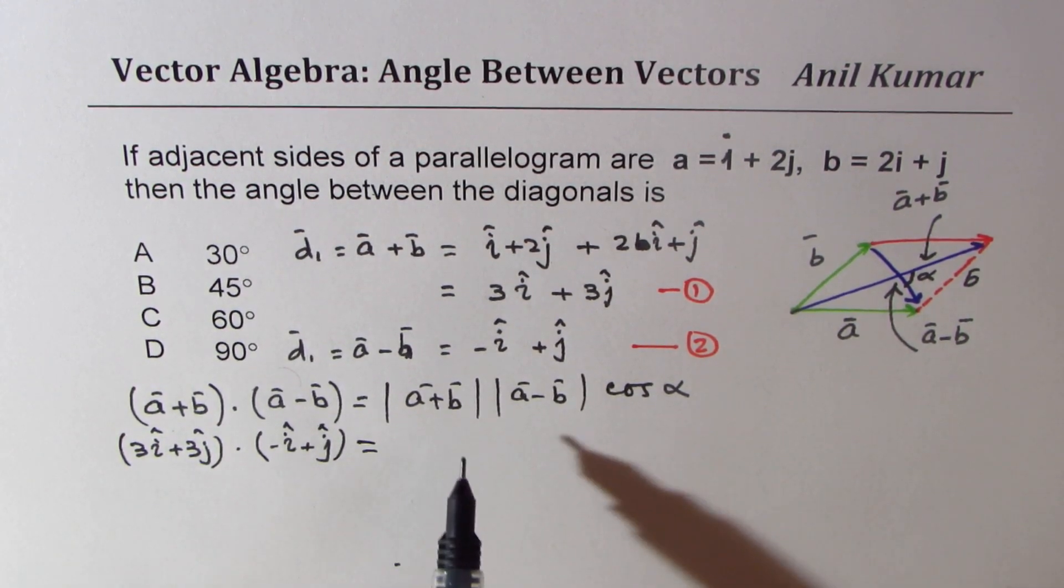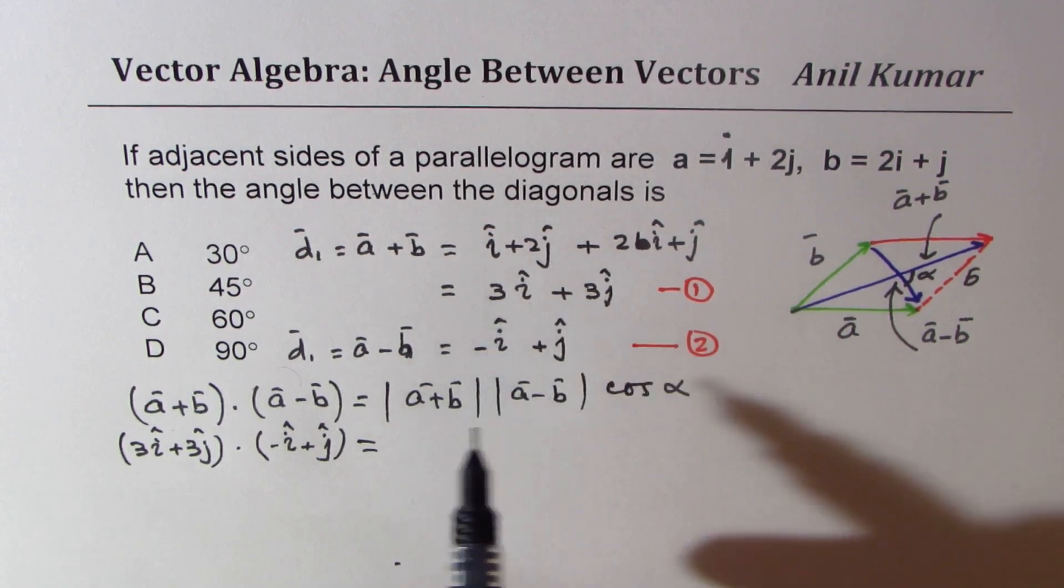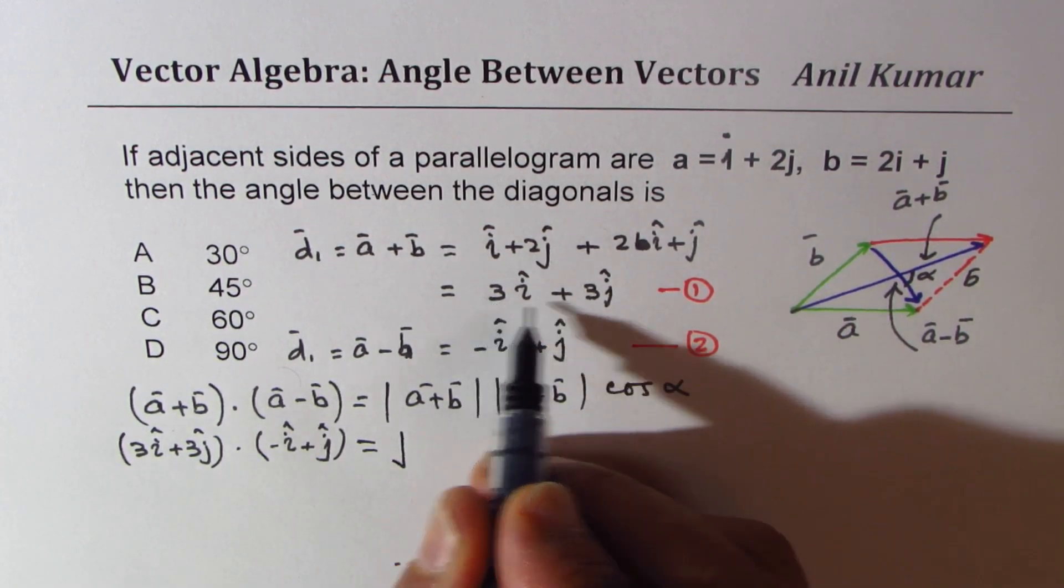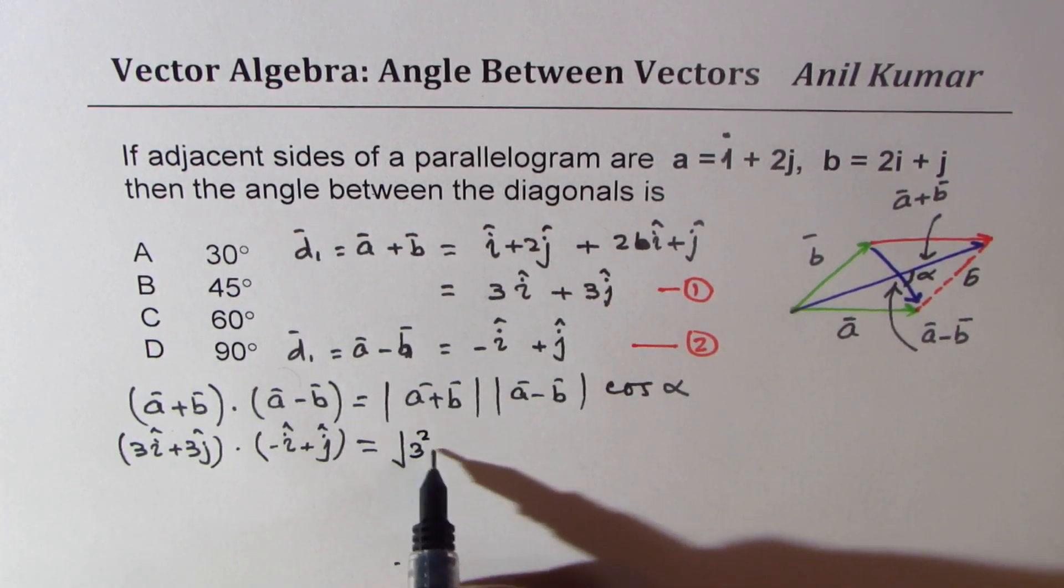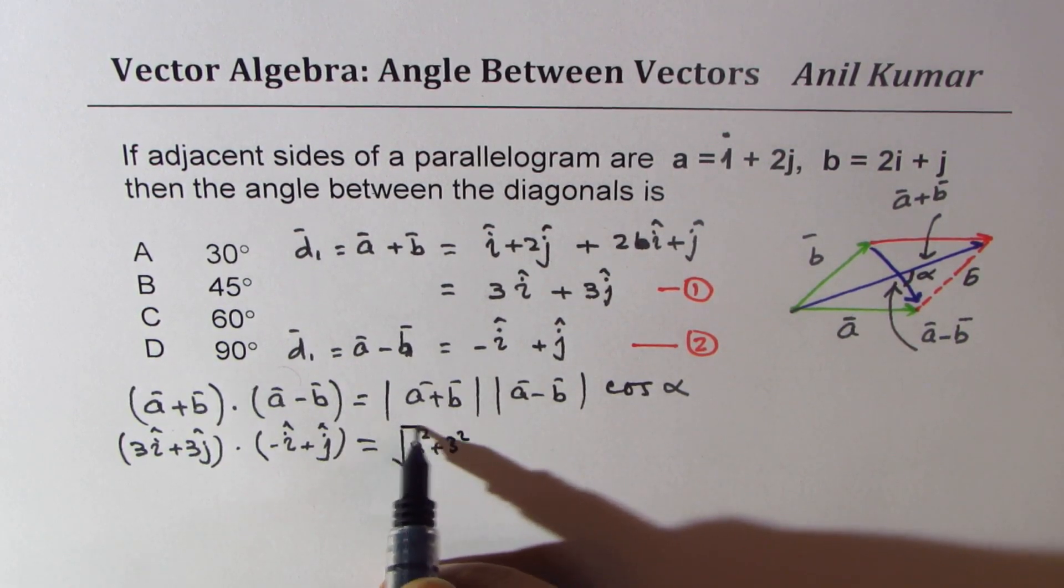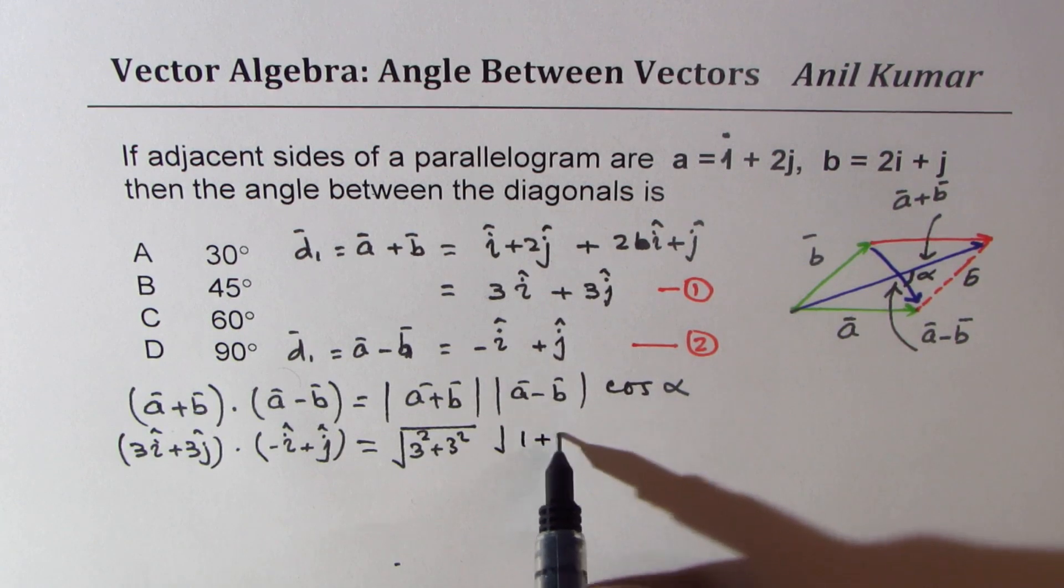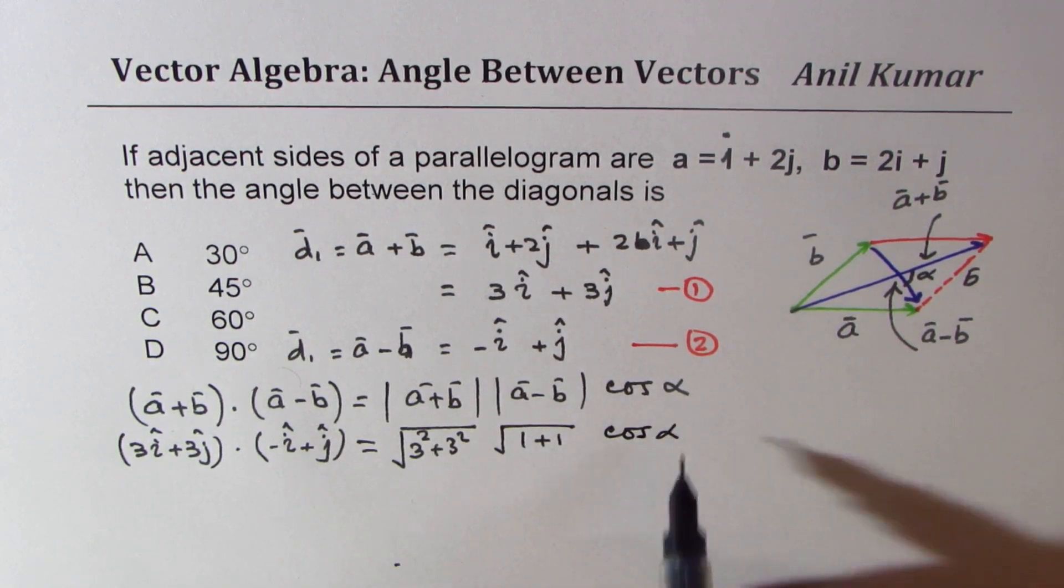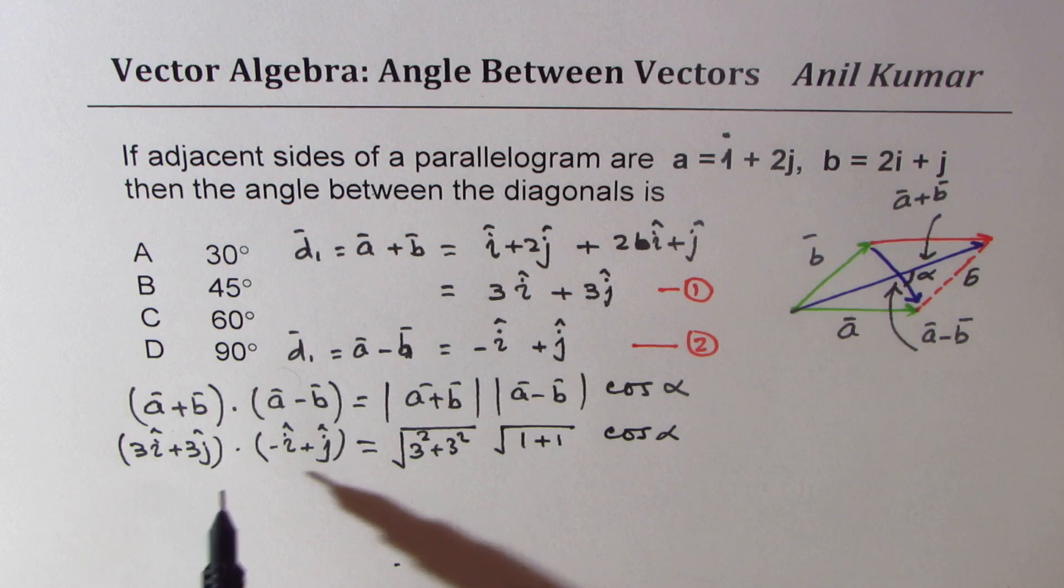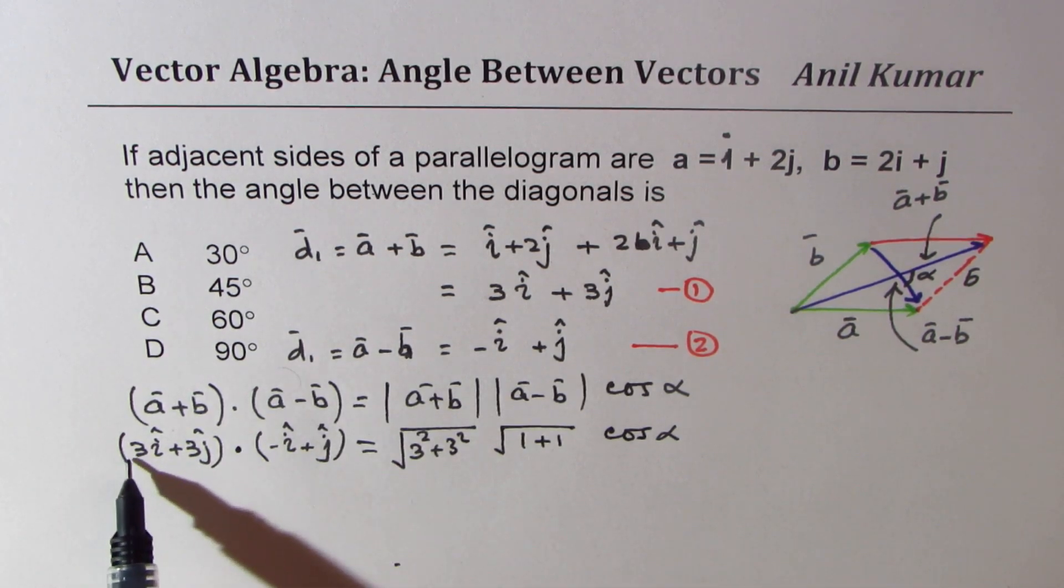That should be equal to magnitude of these. Now what is the magnitude of a + b? The magnitude is square root of 3² + 3². And magnitude here is √(1 + 1), and this is cos of alpha.